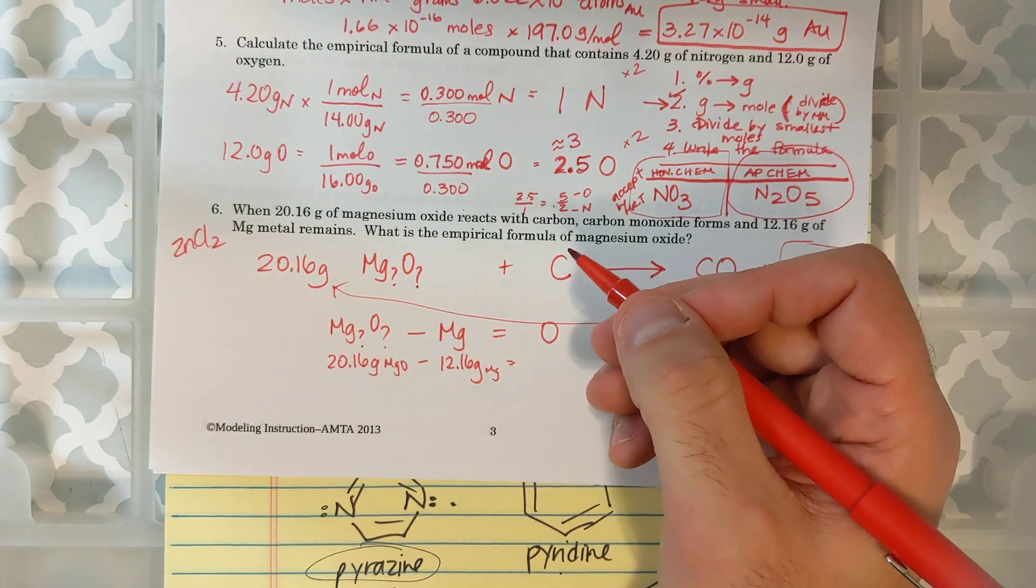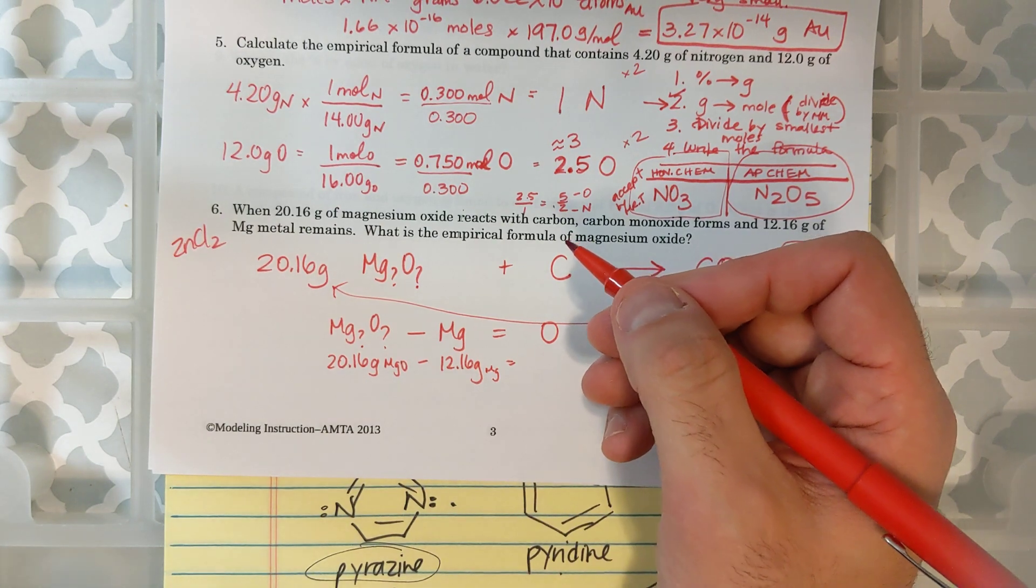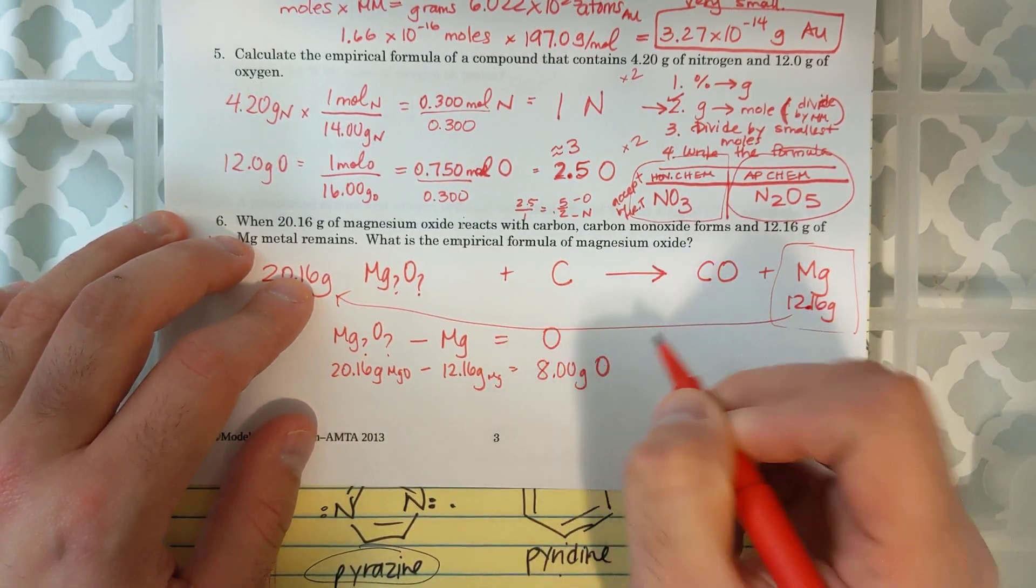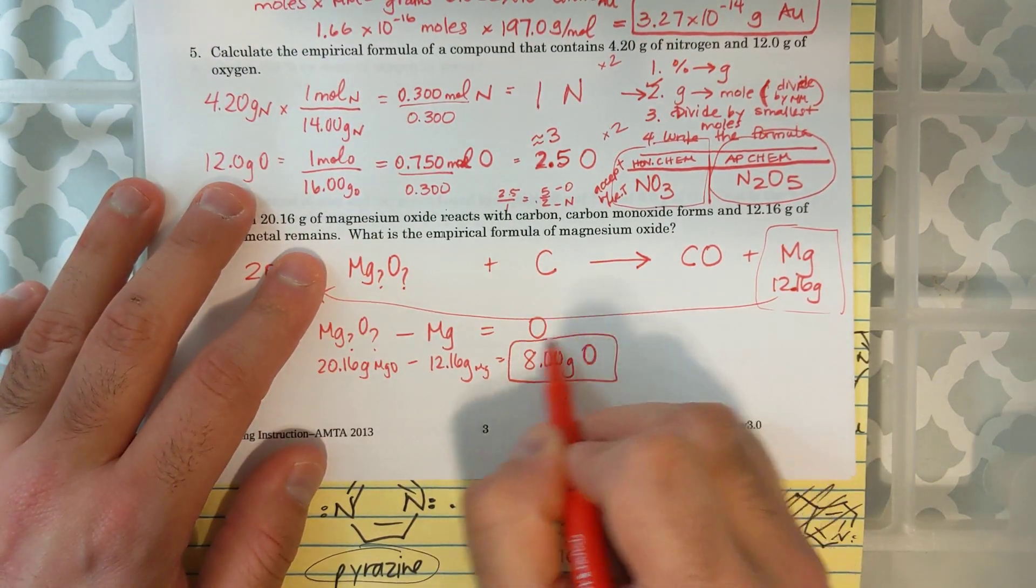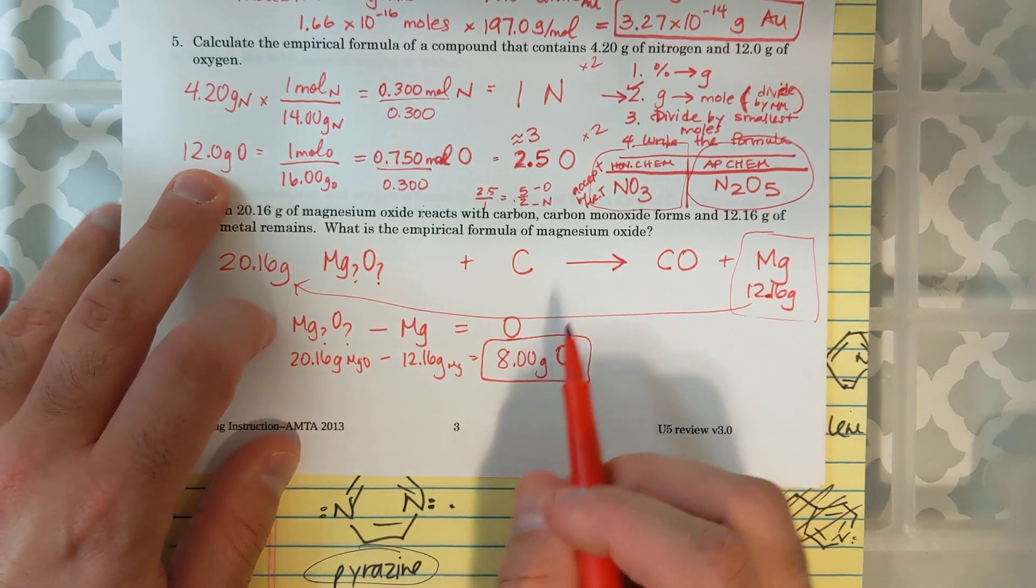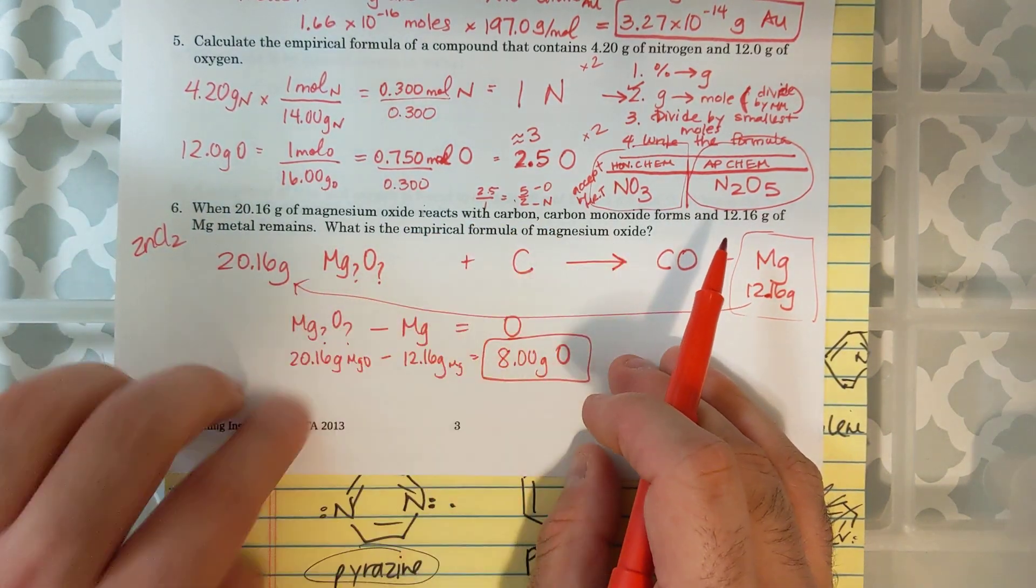So, 20.16 grams of MgO minus 12.16 grams of Mg. I get, and you should get about 8 grams. I get 8 grams of O. And so, now I have two elements. I have my mass of magnesium and my mass of oxygen.